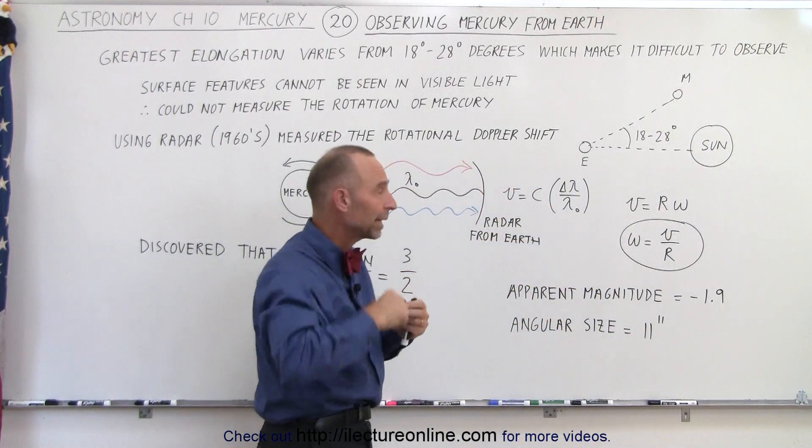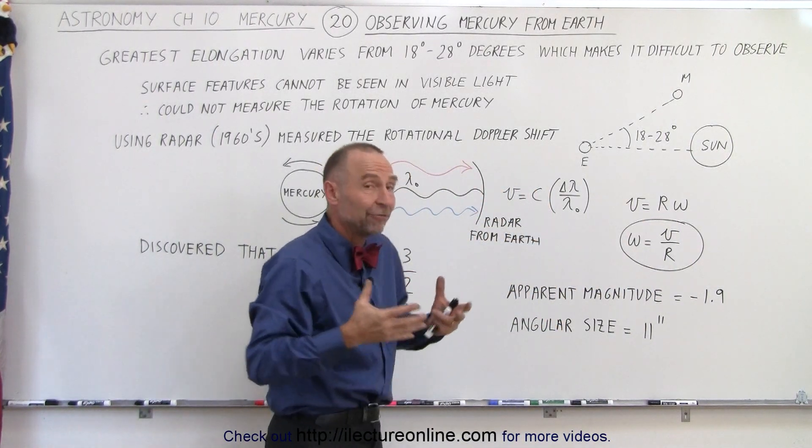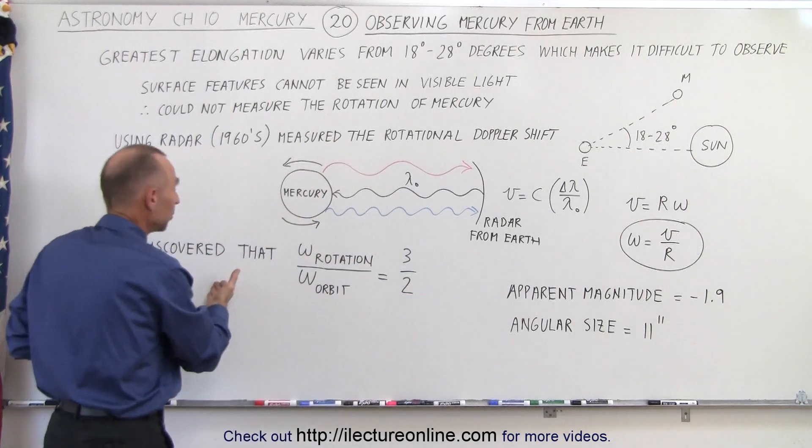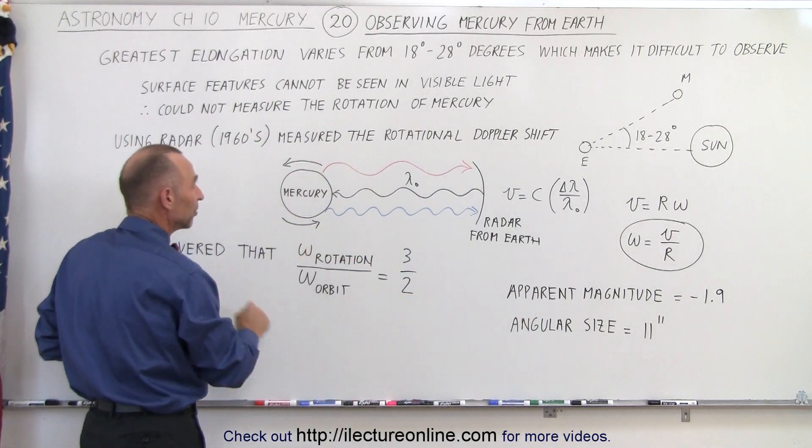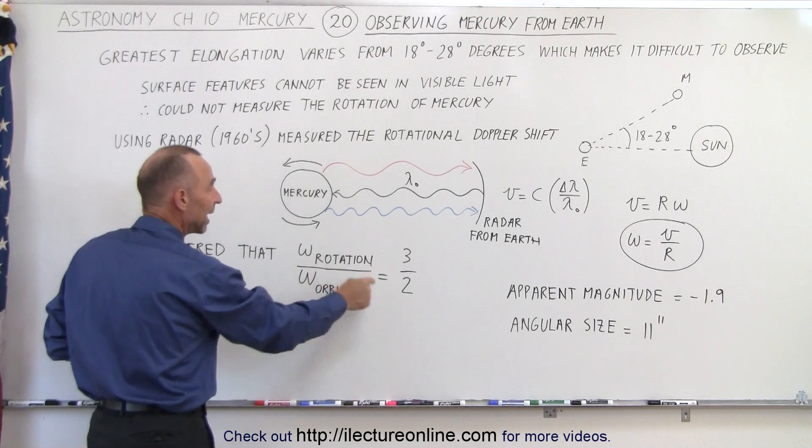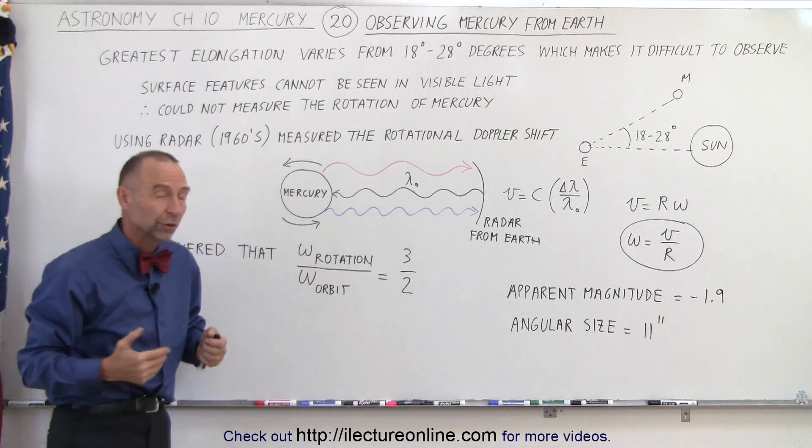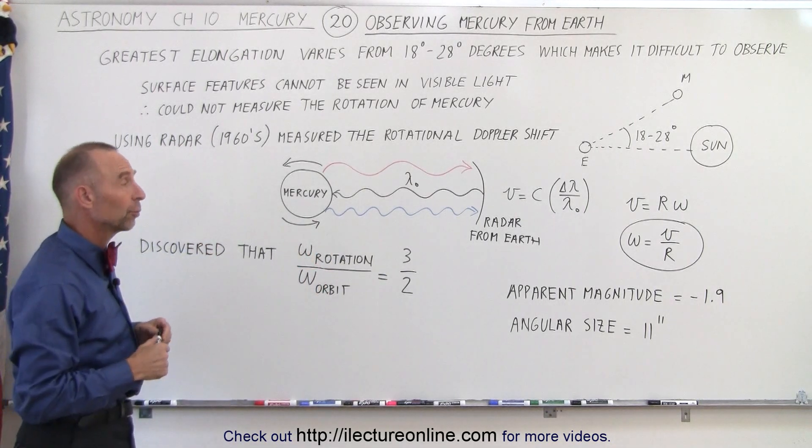and from that we can calculate the angular velocity, the rate at which the planet rotates on its axis. And from that we discovered that the ratio between the rotational angular velocity and the orbital angular velocity ended up being a 3 to 2 ratio, not a 1 to 1 ratio as originally thought.